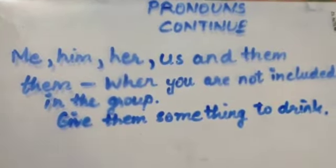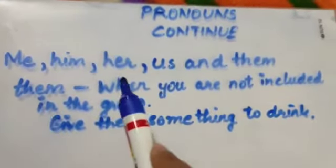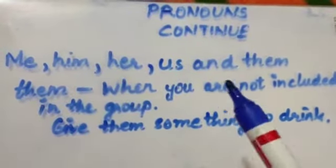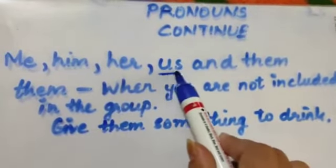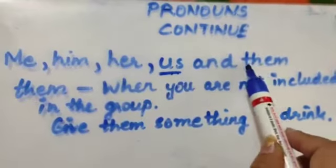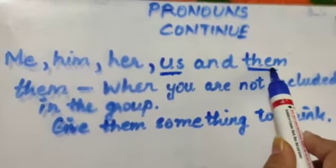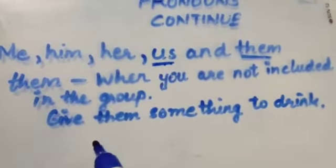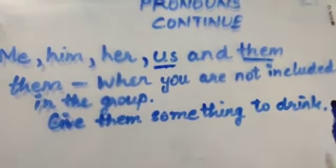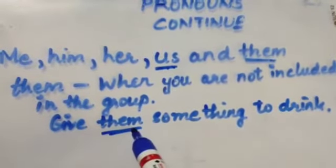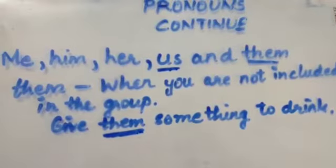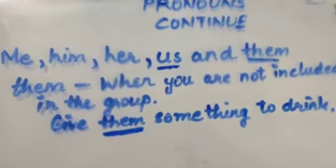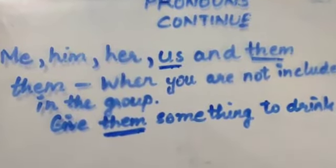The last one is them. We use them when you are not included in the group. In the case of us, you are also there in the group. But with them, you are not in that group — you are talking about another group in which you are not there. For example: give them something to drink. You are talking about a group of persons and you are not a part of that group. So we use them when you are not included or not a part of that particular group.